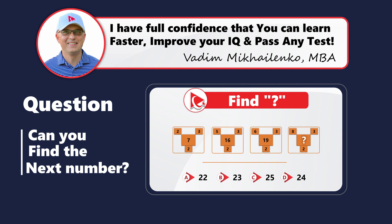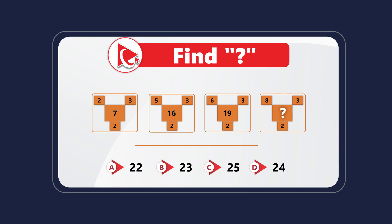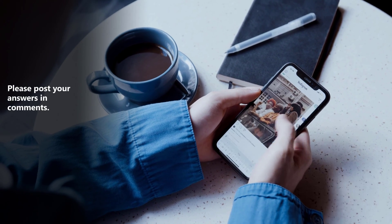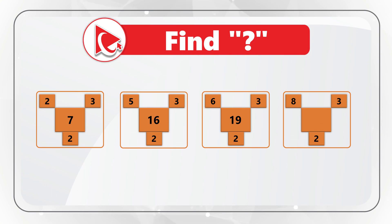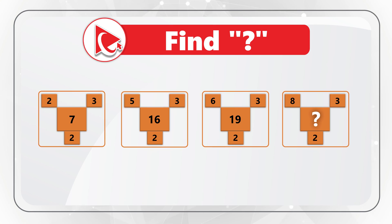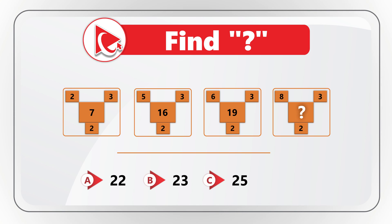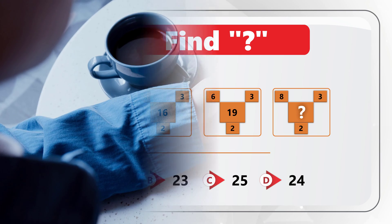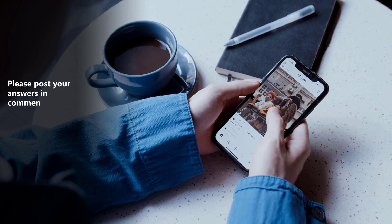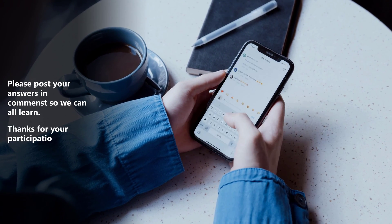And now here's a surprise question for you to try your skills. Instead of giving you the answer, I'm going to ask you to calculate it and post your solution in comments. You're presented with four shapes — three fully populated with numbers, and the fourth has the middle number missing. Calculate the missing number from four choices: A=22, B=23, C=25, D=24. Post your answer in comments so I can share the final answer and give you feedback. Good luck.